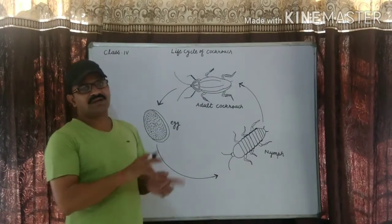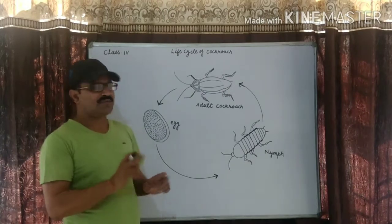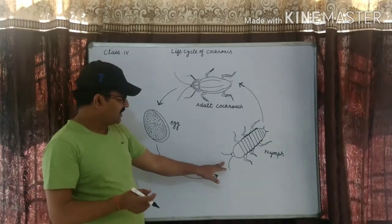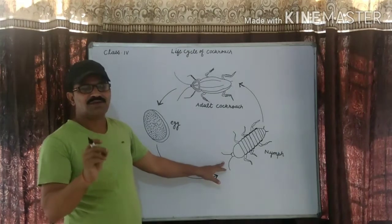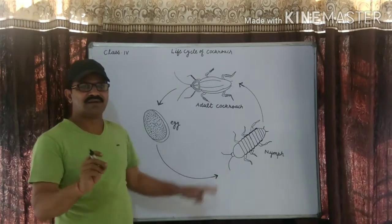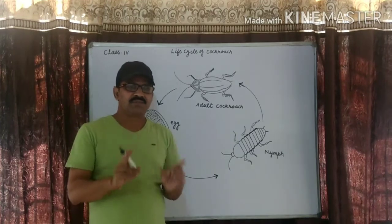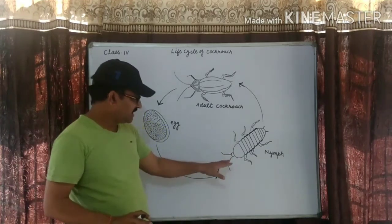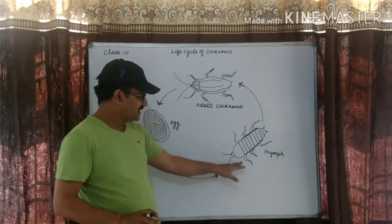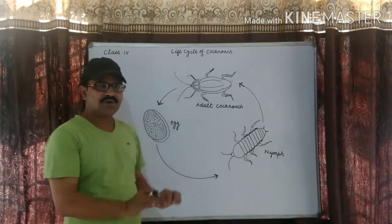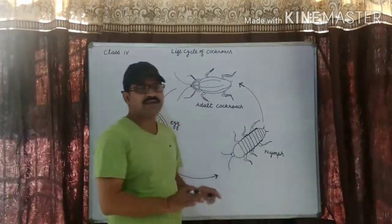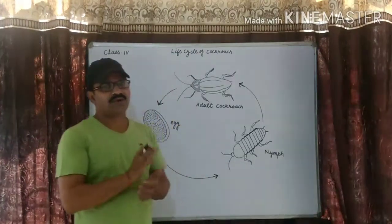The baby cockroach that comes out from the eggs is called nymph. Wings and reproductive organs are not developed in this stage. When it is a nymph, it does not have wings and no reproductive organs.